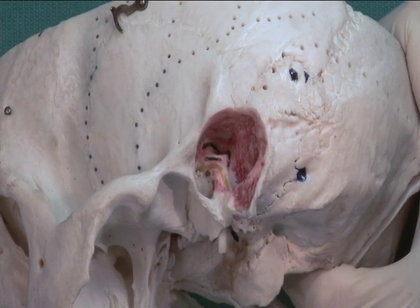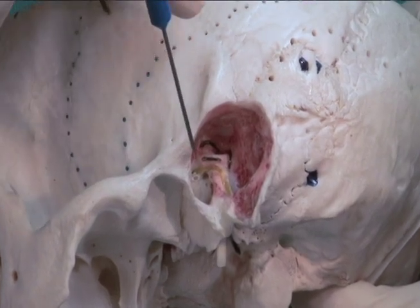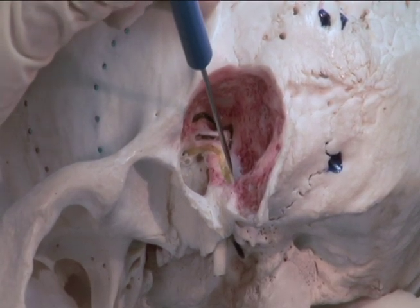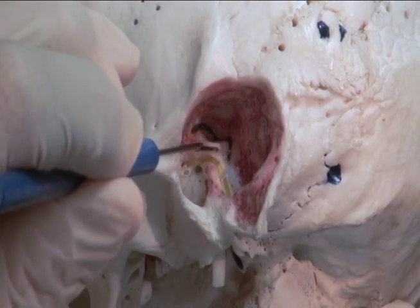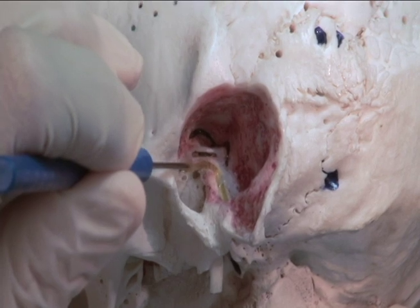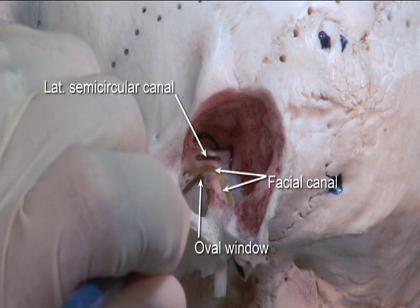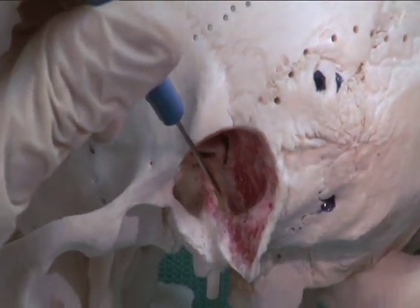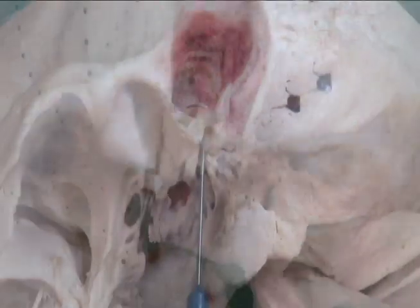In another preparation, the interior of the mastoid process has been exposed, revealing the horizontal portion and descending portion of the facial canal. Note the lateral semicircular canal above the facial canal, and the oval window below it. The descending portion of the canal can be traced to the stylomastoid foramen.